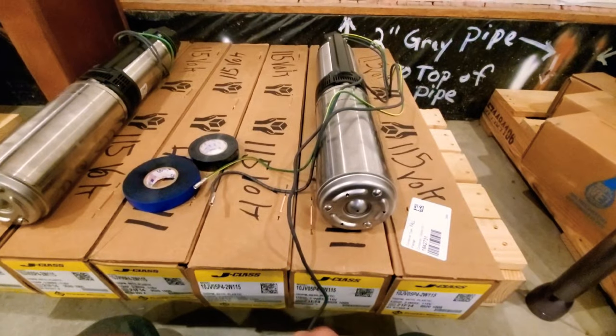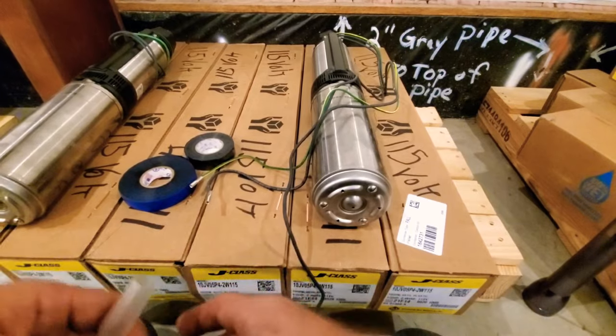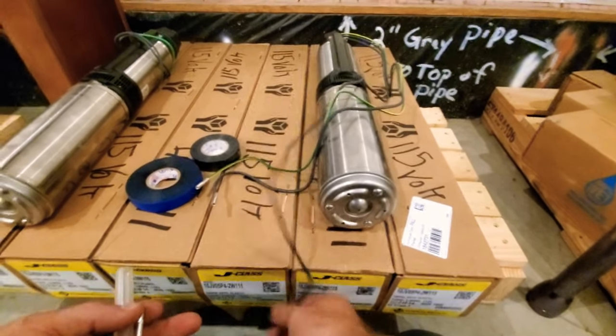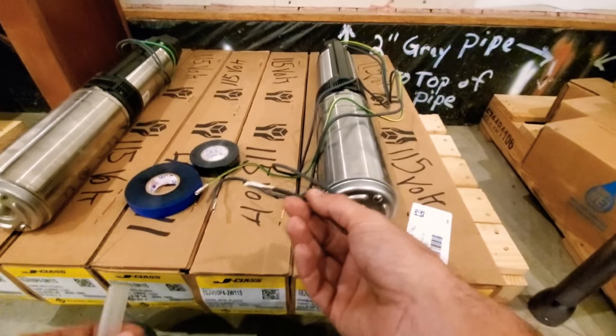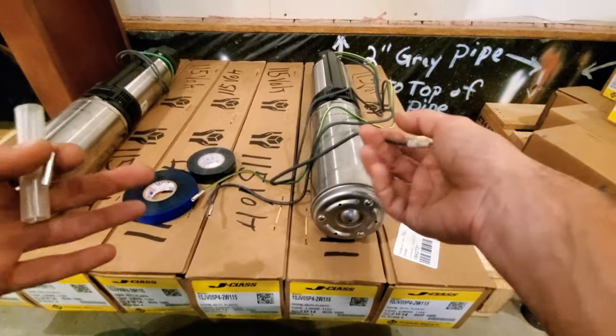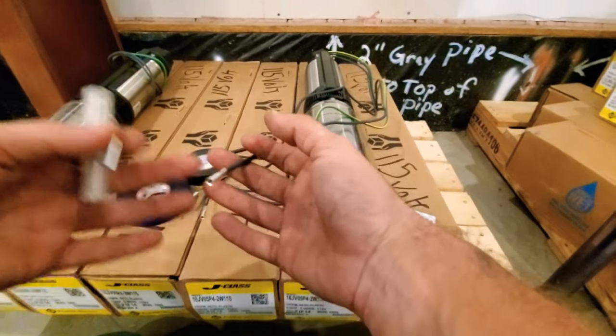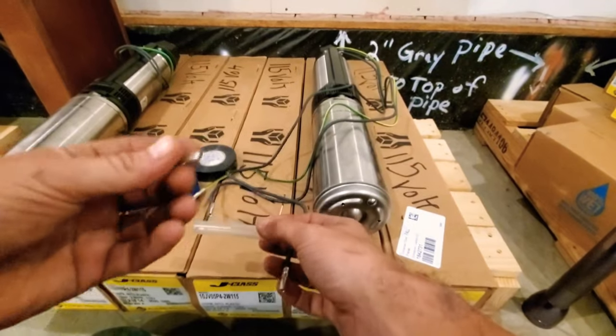Now another common reason for why the well pump is tripping the breaker after you just installed it is typically going to be how you spliced your wires. There's only really two ways of doing this that I would say is proper or professional, and I'm going to show you both ways right now.